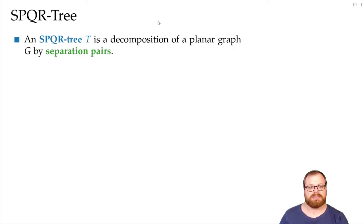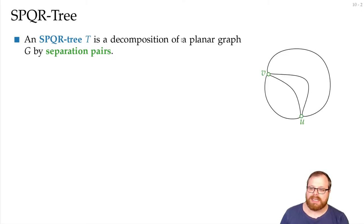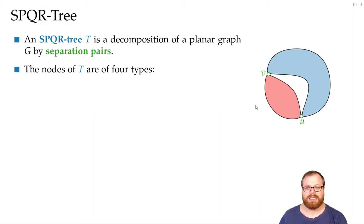And we do that by separation pairs. So, if we have a separation pair UV, then we can cut the graph between them into two parts, the red and the blue part. That also means that we can recursively go inside, again find separation pairs, and decompose it furthermore. And from that decomposition we will get a tree.